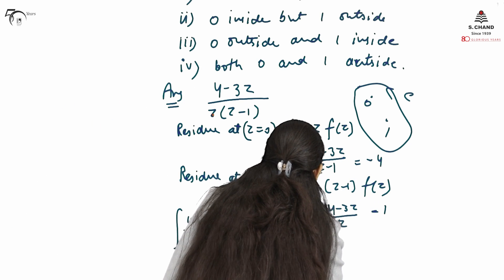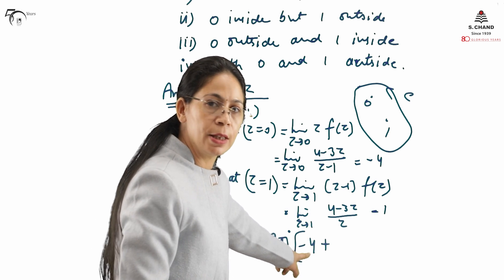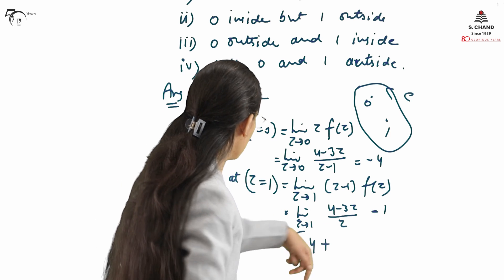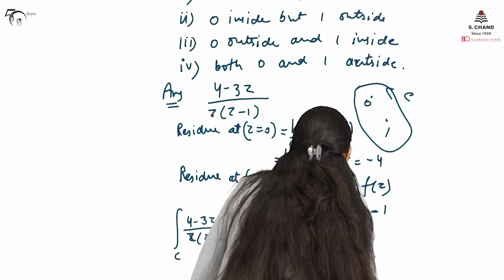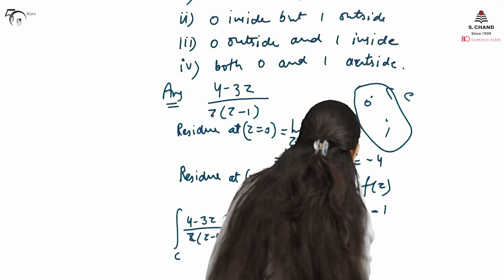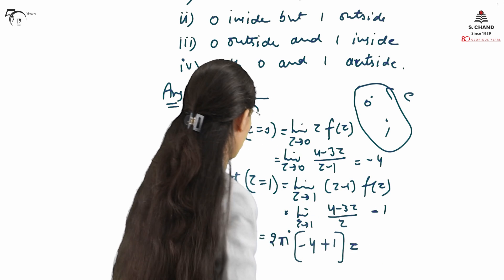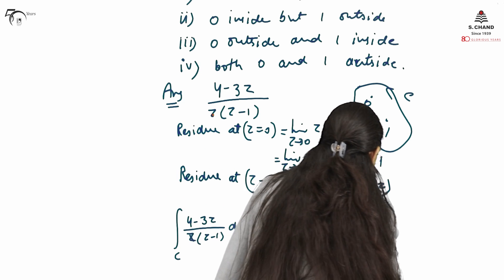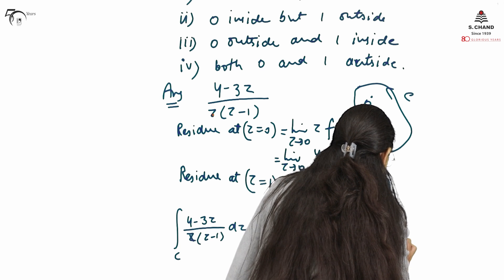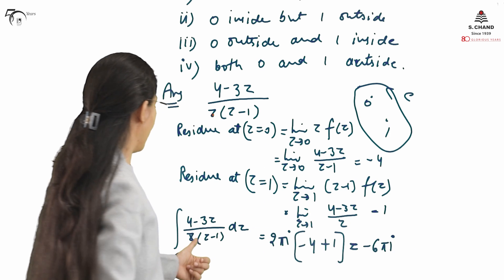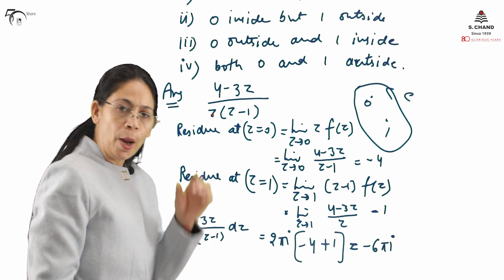The sum of the residues at z = 0 and z = 1 is −4 + 1 = −3. Therefore the integral equals 2πi × (−3) = −6πi. This is the value of the integration when both singularities z = 0 and z = 1 lie inside the curve C.